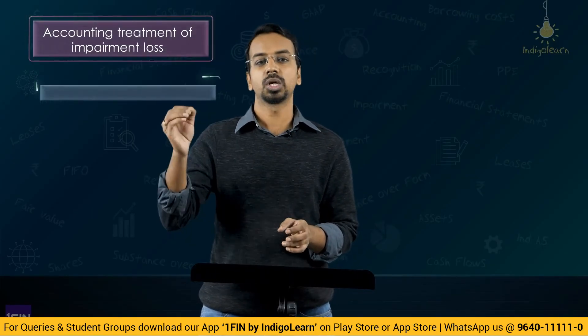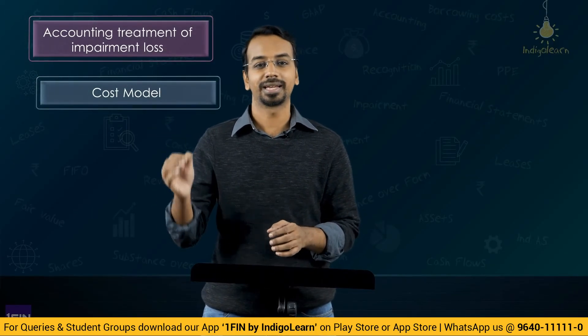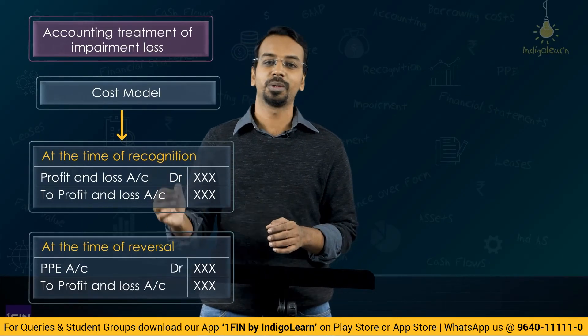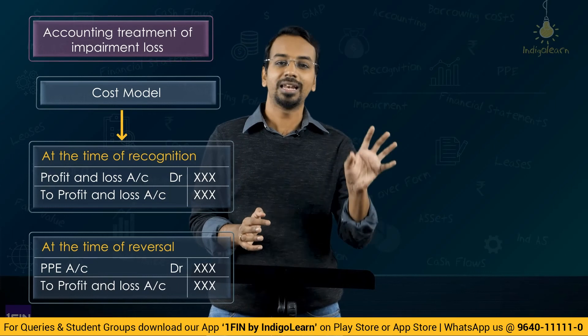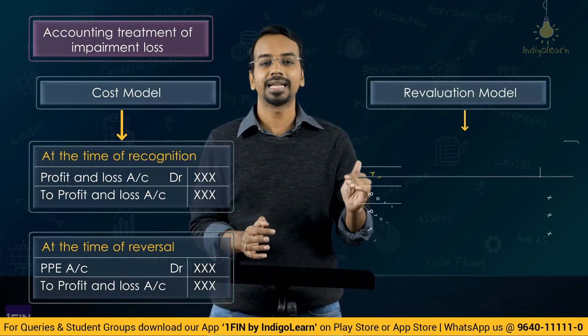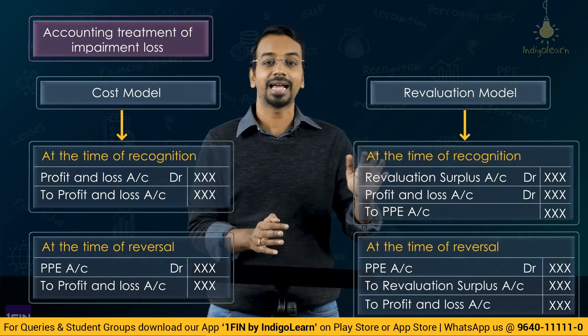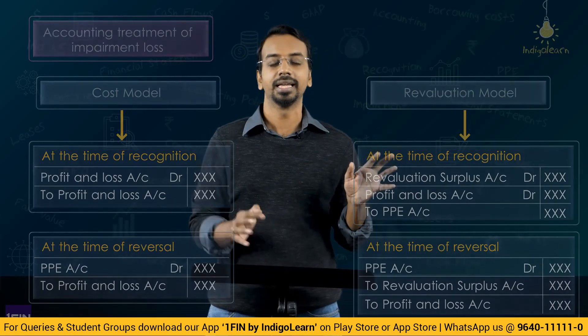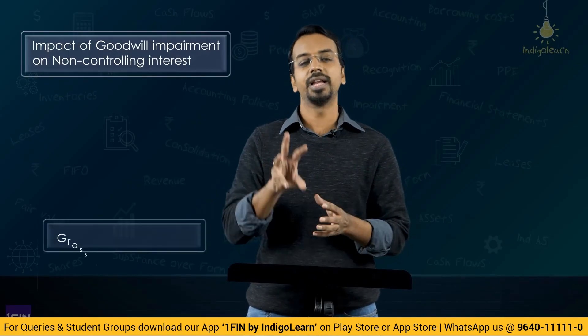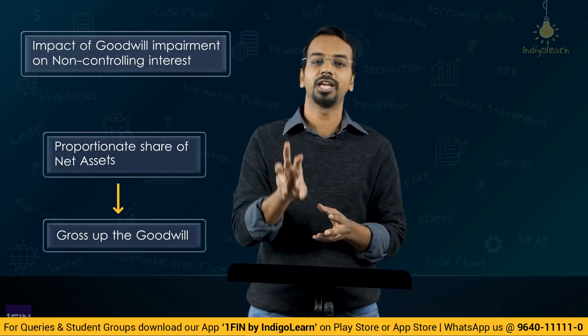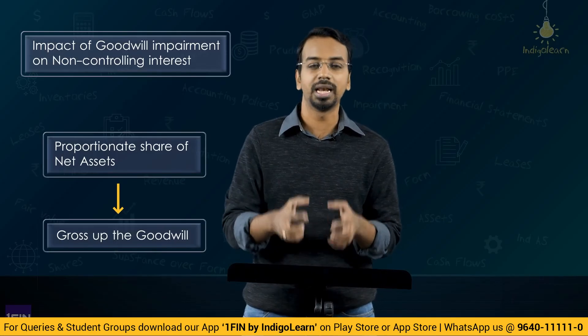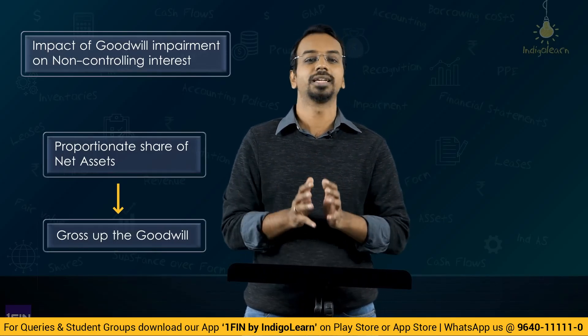After determining the impairment loss or reversal, where should you recognize them? If the entity is following the cost model, impairment loss and reversal of impairment loss will both be recognized in P&L. If the entity is following a revaluation model, impairment loss will be treated as a downward revaluation and reversal of impairment will be treated as an upward revaluation and treated accordingly. We also understood the impact of goodwill impairment on non-controlling interest: if the entity is following the proportionate share of net assets method, you will have to gross up the goodwill and calculate the impairment loss accordingly.